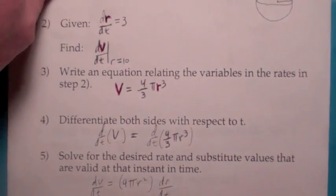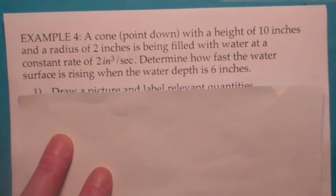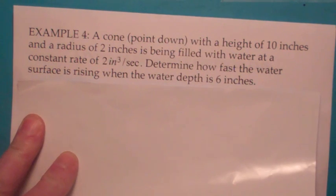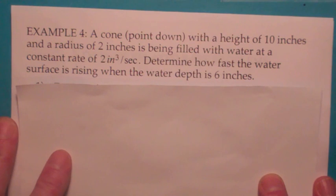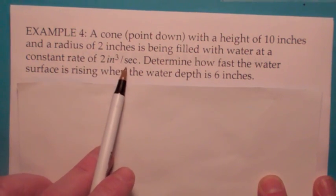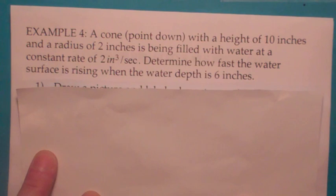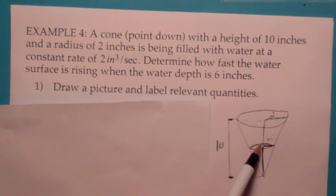I would call this second type of problem an example of a geometric formula type problem. Here we have a cone that has height 10 inches and radius 2 inches. It's being filled with water at a constant rate of 2 cubic inches per second — so that's dV/dt. The question is how fast is the water level rising when the depth is 6 inches? Don't get the volume of the cone mixed up with the volume of the water. The volume of the water changes, but the cone dimensions — radius 2, height 10 — stay constant.